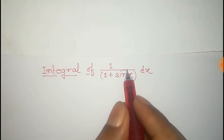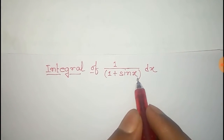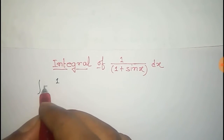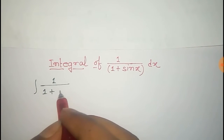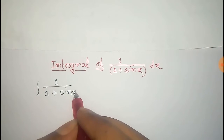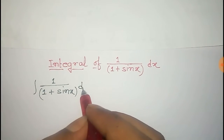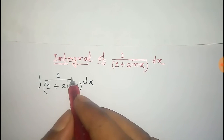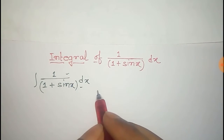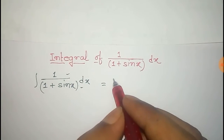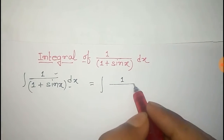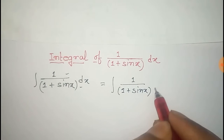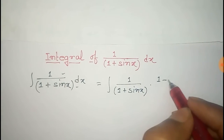In this video we will find the integral of 1 divided by 1 plus sin x dx. To find the integral, we multiply by 1 minus sin x with both the numerator and denominator, so it will be 1 divided by 1 plus sin x, multiplied by 1 minus sin x divided by 1 minus sin x, all times dx.